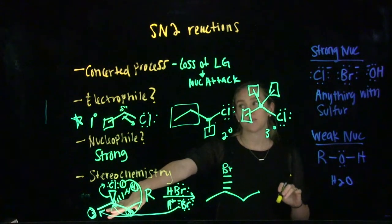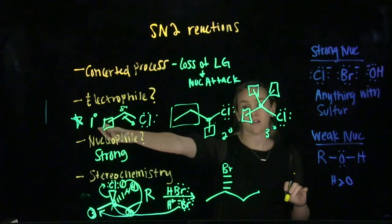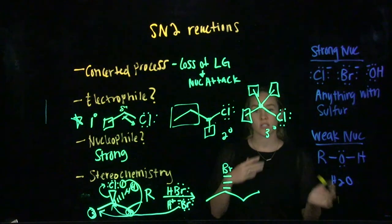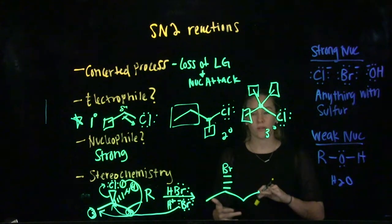This is if your molecule is chiral. Because SN2 reactions prefer primary electrophiles, not all of them will be chiral. So this is just something to keep in mind as you're going through mechanisms.